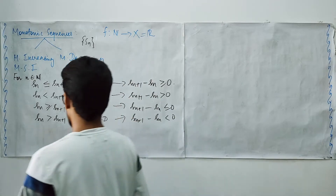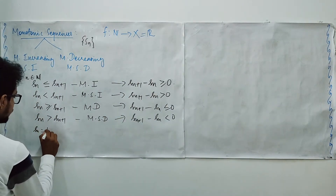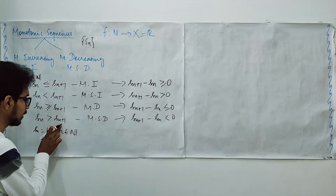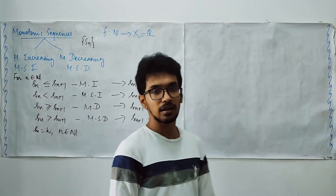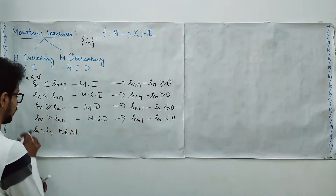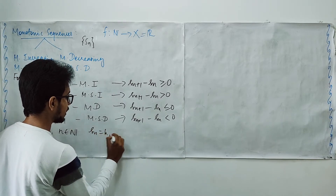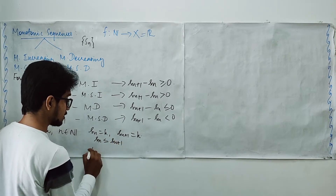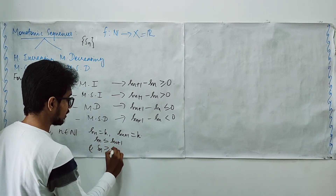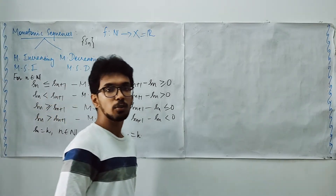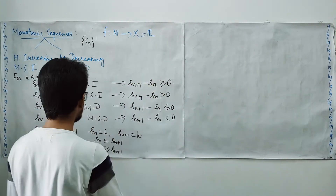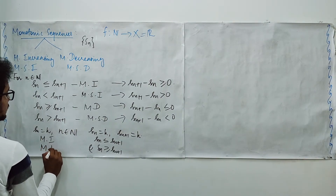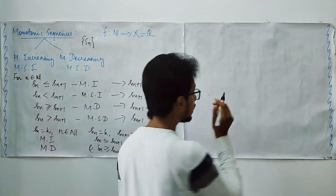Now if we define a constant sequence where every term equals k, then S_n equals S_{n+1} for all n. So we may write S_n less than or equal to S_{n+1} as well as S_n greater than or equal to S_{n+1}. The equality holds for all values of n, and hence the constant sequence belongs to both categories: monotonically increasing and monotonically decreasing.